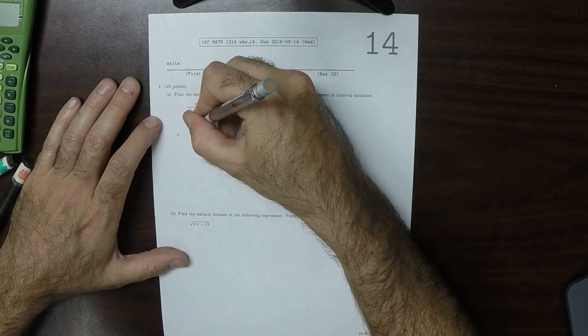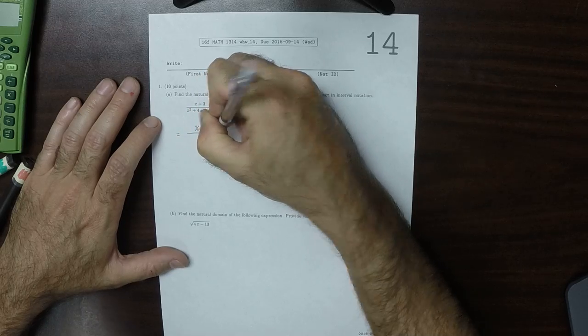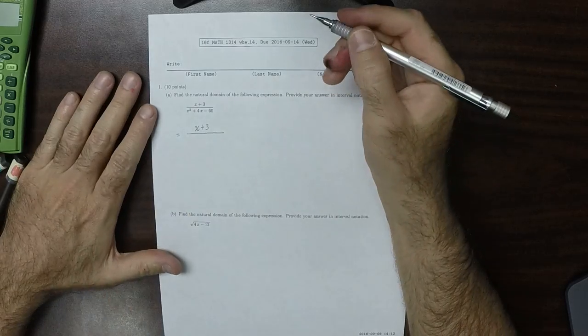So the factorization of this expression is, well, the numerator's already factored. And then the denominator, two numbers whose product is 60 and whose sum is 4.